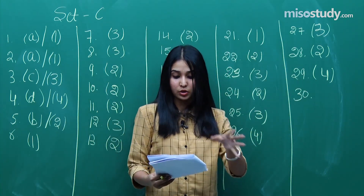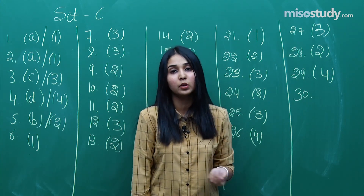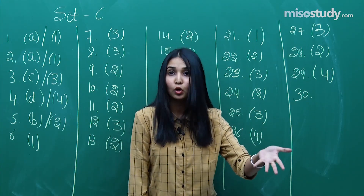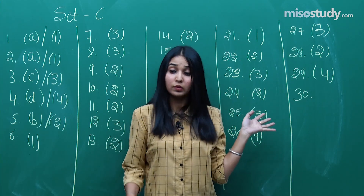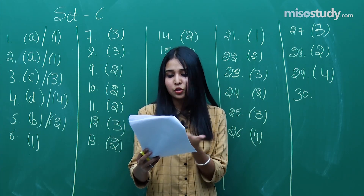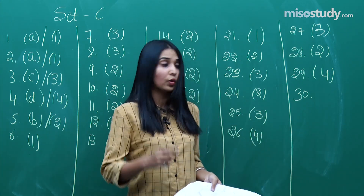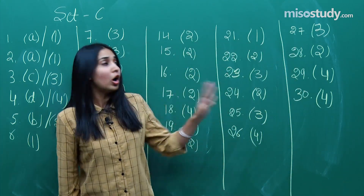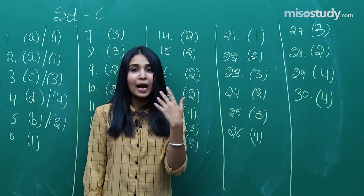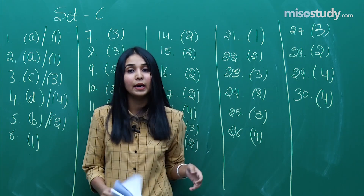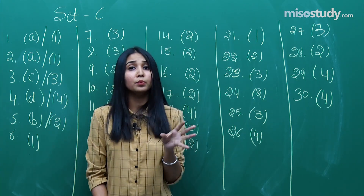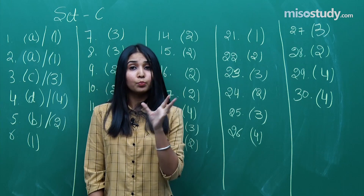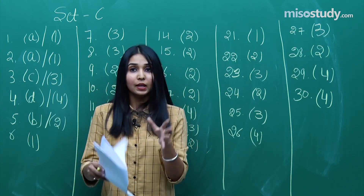The last question — question number 30 — was from the solutions chapter. A really basic question: if you had done the basic concepts properly, you would have been able to do it easily. The correct option for question 30 is option 4. That covers all of the chemistry section. The examiner covered maximum physical chemistry this time, and both 11th and 12th class content was represented almost equally.